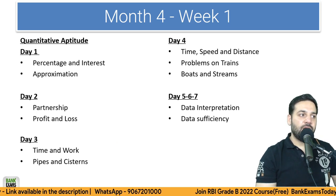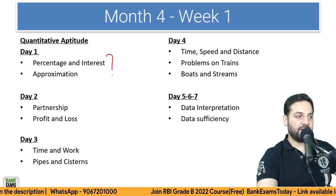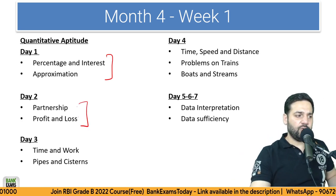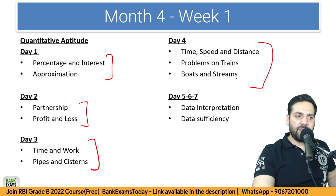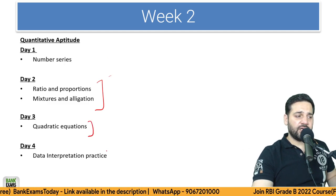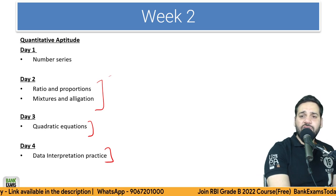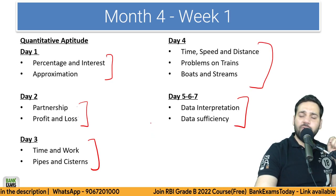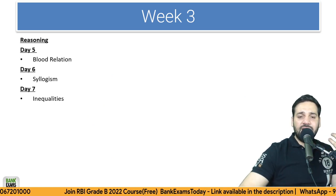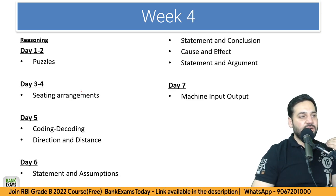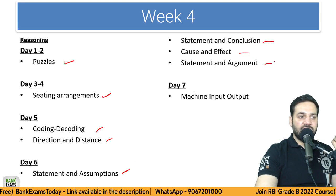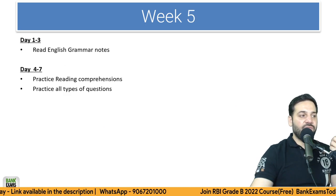In month four, start with Quantitative Aptitude from day one: percentage, interest, approximation, profit and loss, partnership, time and work, pipes and cisterns, time speed and distance, problems on trains, boats and streams, data interpretation, data sufficiency, number series, ratio proportion, and quadratic equations. You can modify this plan based on your needs — if you are weak in QA, give it three weeks or more. In week three, start Reasoning: begin with easier chapters like blood relations, syllogism, and inequalities, then move to puzzles, sitting arrangement, coding-decoding, direction sense, statements and assumptions, conclusions, cause and effect, statements and arguments, and machine input-output.